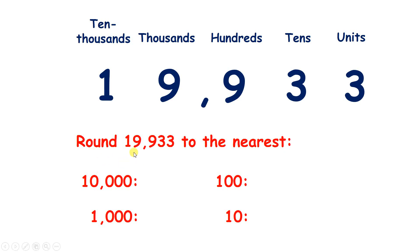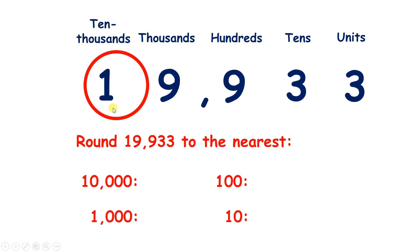We need to round the number 19,933. Rounding to the nearest 10,000, we find the place — which is our 10,000s — look next door, and 5 or more we need to raise the score, so that 1 needs to become a 2. Then, looking to the right, put zeros in sight — we have 20,000.